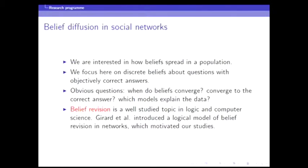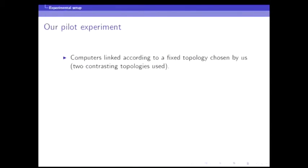In their model there are two different ways of changing beliefs: you can be convinced that P is true if there's sufficient evidence among your neighbors directly, or if you believe not-P and don't have enough evidence to be convinced of P, you can become undecided. There are clear rules for how to do that. We did some simulations and thought maybe we could do something analytically, but it's a difficult model. We decided we should actually see whether it has any relevance to the problem, so we tried a lab experiment.